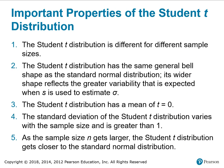There are important properties of the Student t-distribution to remember. It is different for different sample sizes. It has the same general bell shape as the standard normal distribution, but its wider shape reflects the greater variability expected when s is used to estimate sigma. The Student t-distribution has a mean of t equals 0, and its standard deviation varies with sample size and is greater than 1. As the sample size n gets larger, the Student t-distribution gets closer to the standard normal distribution.